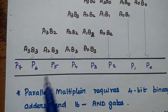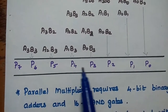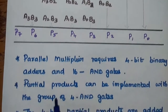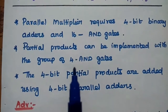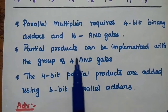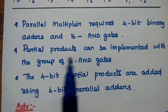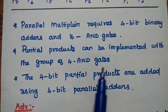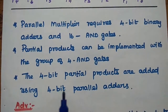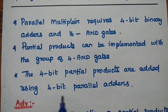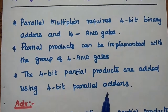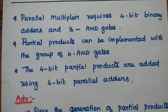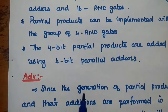The output values P7, P6, P5 represent the final answer of this product. The parallel multiplier requires 4-bit binary adders and 16 AND gates. Partial products are implemented with groups of 4 AND gates, and the 4-bit partial products are added using 4-bit parallel adders — all these operations performing simultaneously.